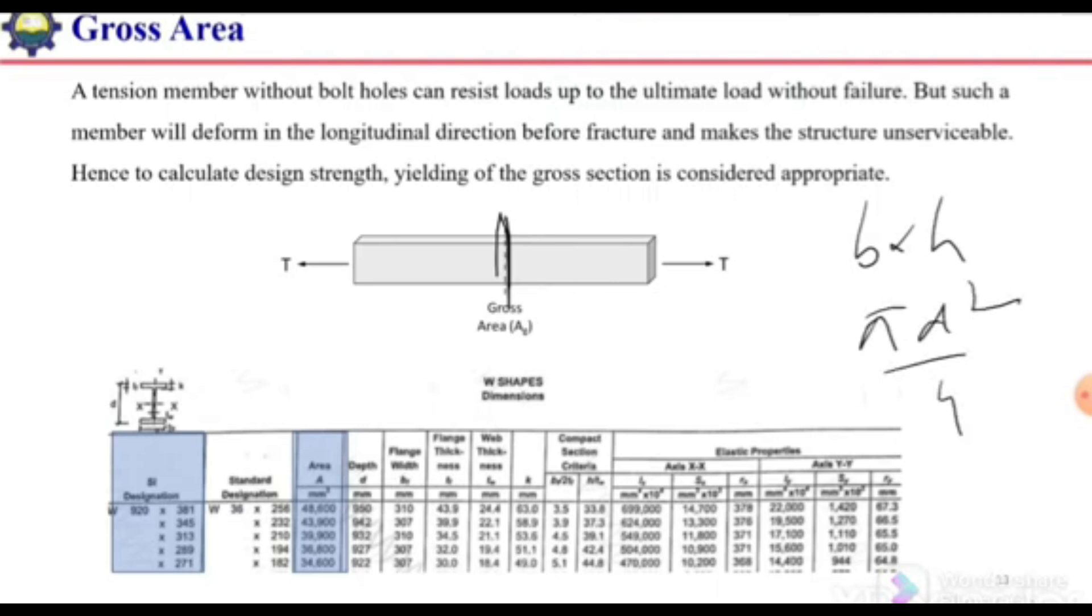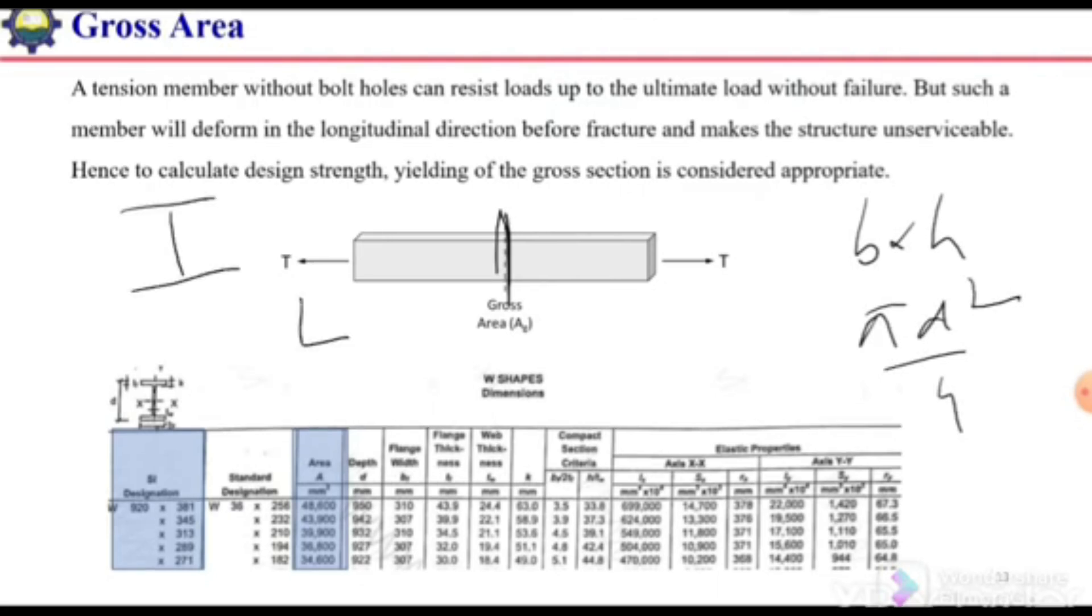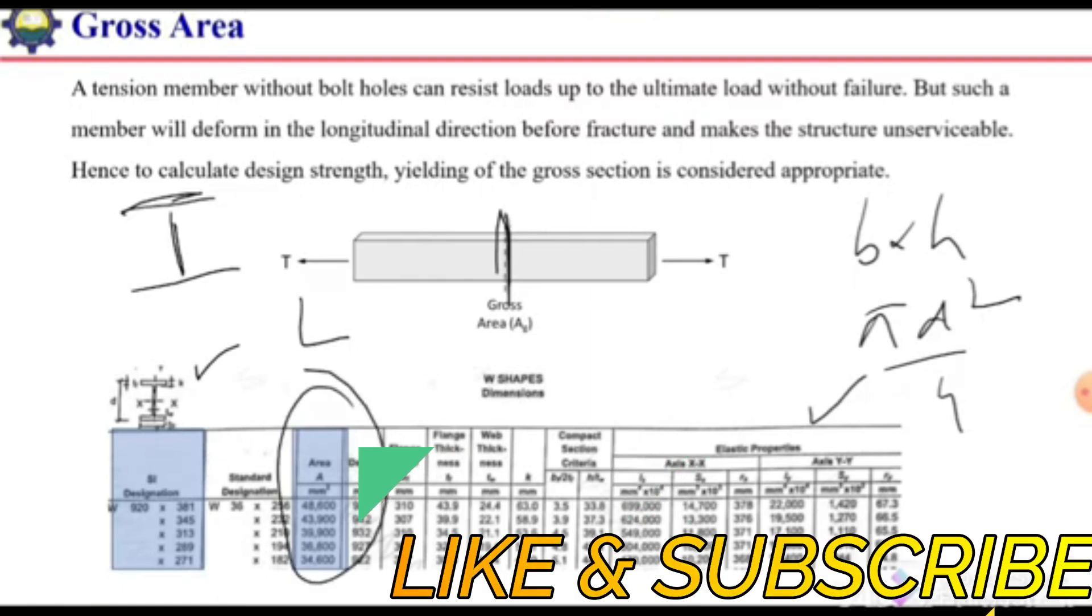But if we have some other structural shapes like W section or angle section, we can calculate the area by using the dimensions of flange and web. Otherwise, in case of standard structural members or standard structural shapes, we can have the table of properties of this section in the LRFD manual. From there, we can find the area of that section.